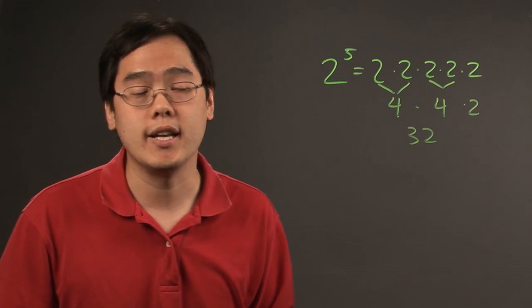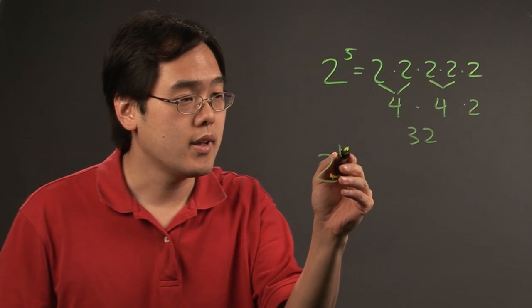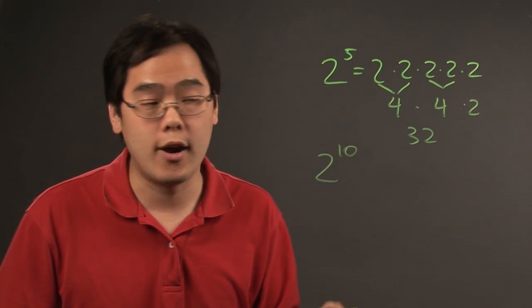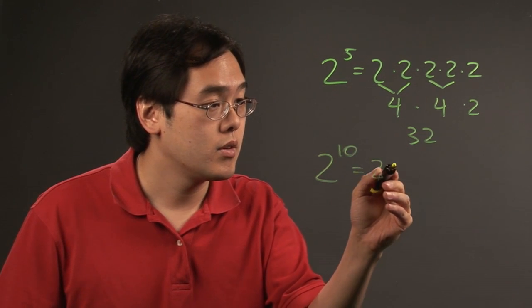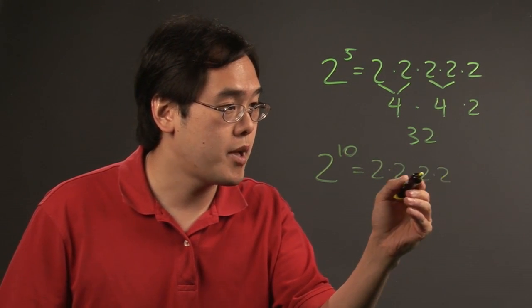Now, if you want to calculate a very high exponent like 2 to the 10th power, you can think of it as 2 multiplied by itself 10 times.